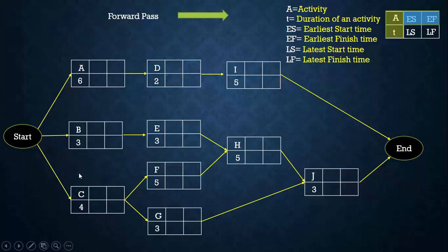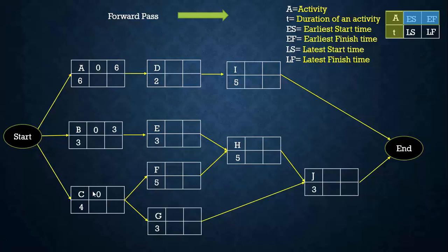Activities A, B, and C can be started simultaneously — they do not require any preceding activity, so they start on day 0. For activity A, earliest start time is 0 and earliest finish time is 0 plus 6, which is 6. For activity B, earliest start is 0 and earliest finish is 0 plus 3, which is 3. For activity C, earliest start is 0 and earliest finish is 0 plus 4, which is 4. For activity D, it needs A to complete, so its earliest start time is the earliest finish time of A, that is 6.